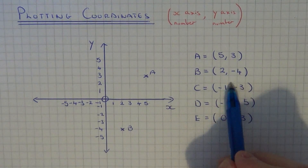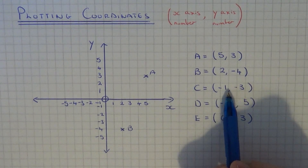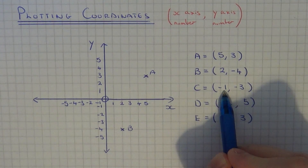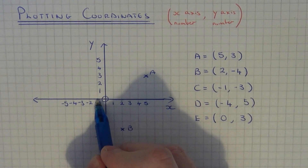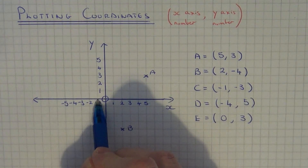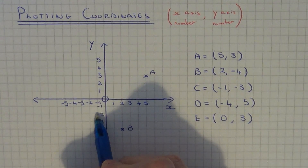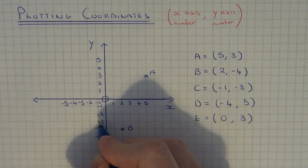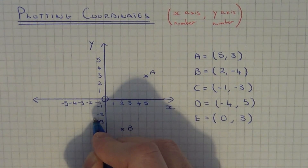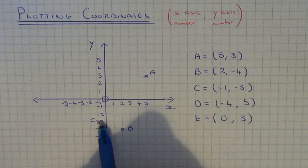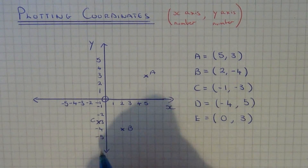So let's plot coordinate C. This time we have minus one comma minus three. So the x-axis number this time is minus one, so we go to minus one on the x-axis. The y-axis number is minus three, so we go three down — one, two, three — and put a little cross here. Again you can check it: minus one on the x-axis, minus three on the y-axis.